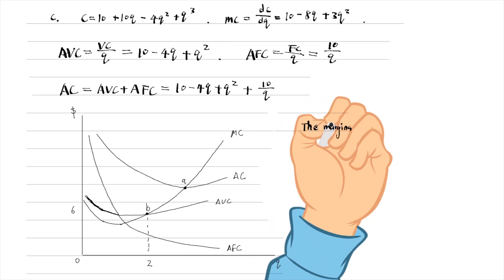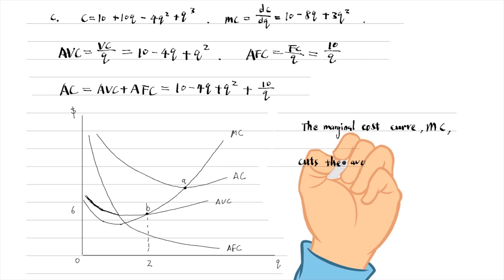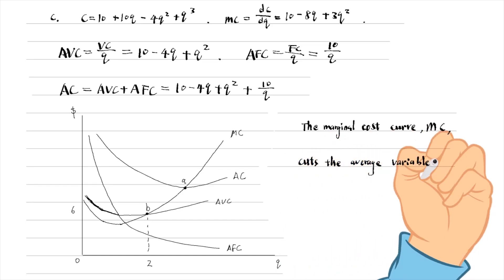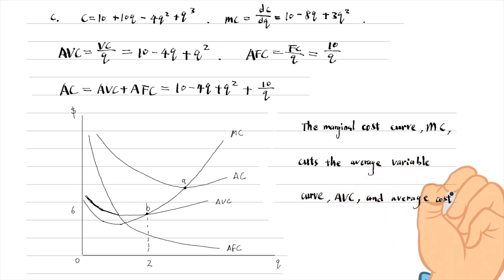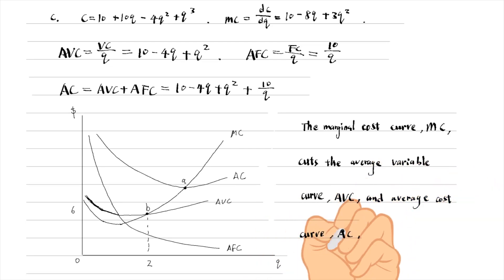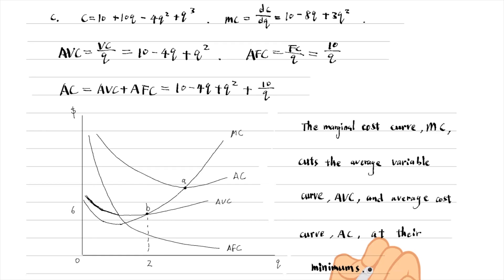The marginal cost curve, MC, cuts the average variable cost curve, AVC, and the average cost curve, AC, at their minimums. The average fixed cost falls as output increases. The marginal cost, the average variable cost, and the average cost curves first fall and then rise.